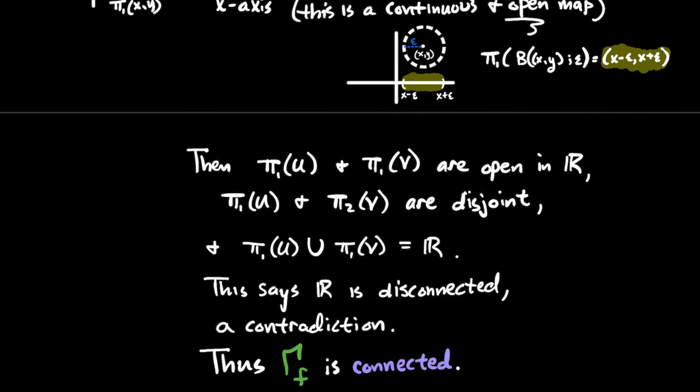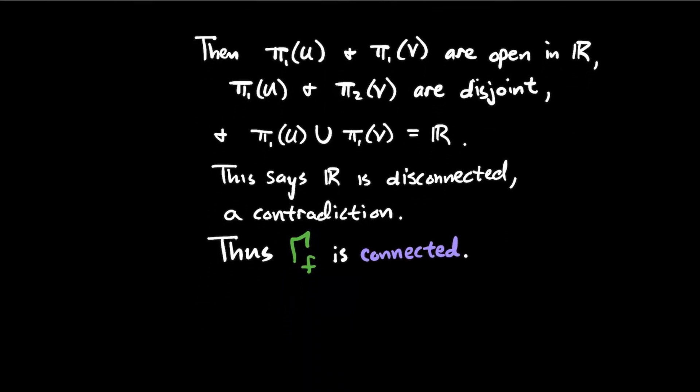And so what do we get then? There's our contradiction. So we can conclude that the graph of f is going to be connected as well.